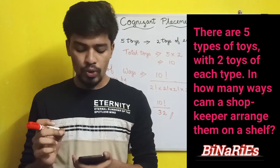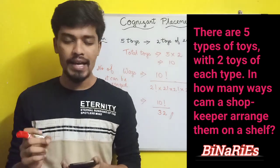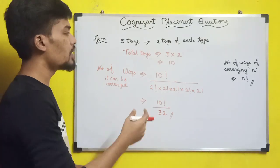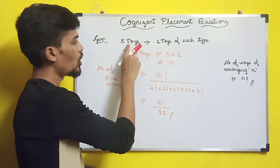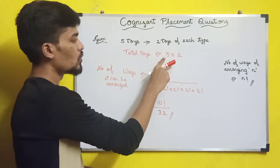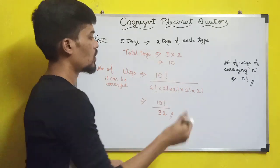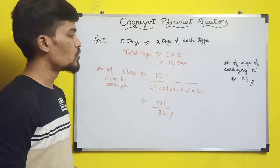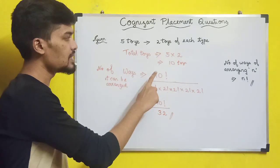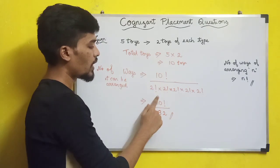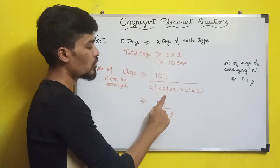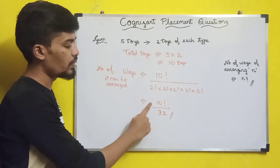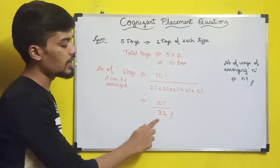The first question: there are five types of toys with two toys of each type. In how many ways can a shopkeeper arrange them on a shelf? Total number of toys = 5 × 2 = 10. The number of ways of arranging n items is n factorial, so arranging 10 toys is 10!. Since each type is repeated twice, divide by 2! five times. So the answer is 10! divided by 32.